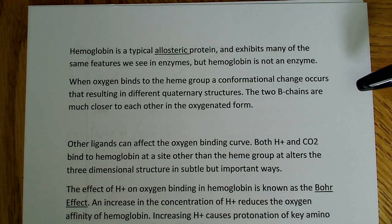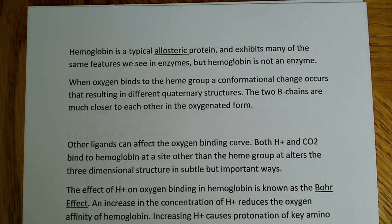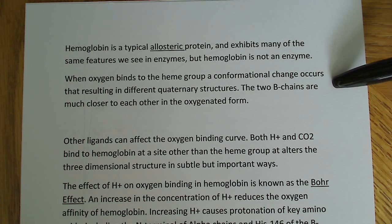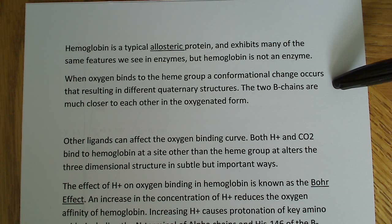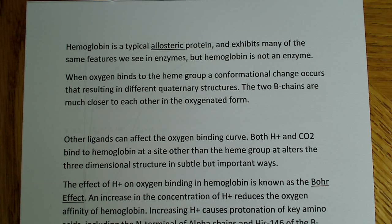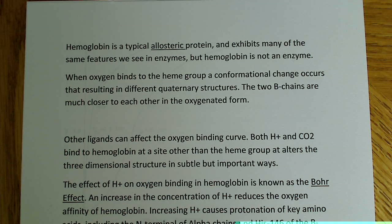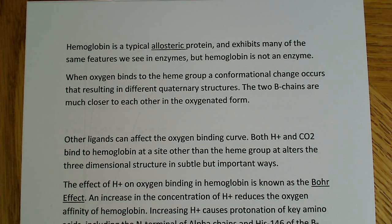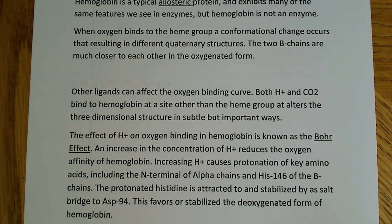When oxygen binds to the heme group, a conformational change occurs that results in a different quaternary structure. The two beta chains are much closer to each other in the oxygenated form. This is talking about just oxygen binding at histidine F8. Hemoglobin shows cooperative binding — once one oxygen binds, it facilitates the ability for the next oxygen to bind, making it easier for each subsequent oxygen, including the fourth.